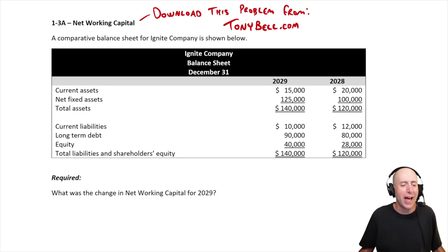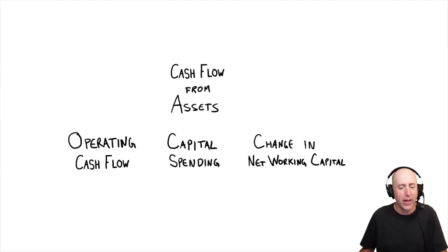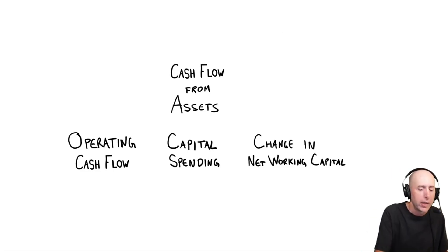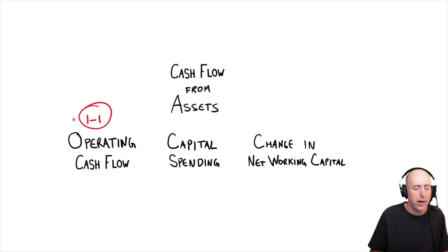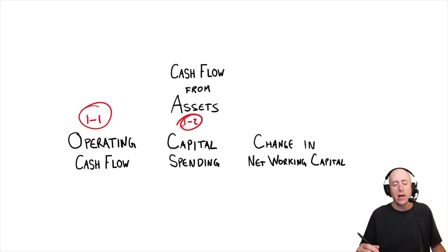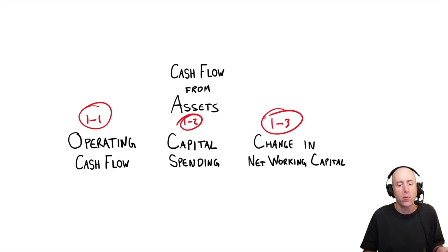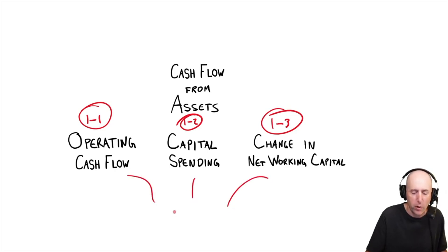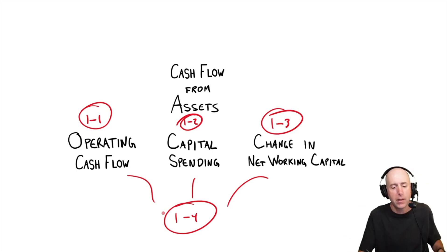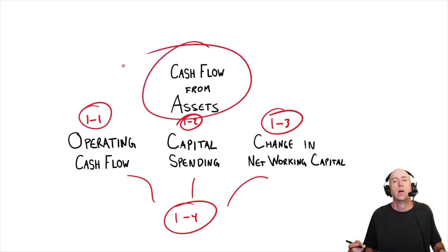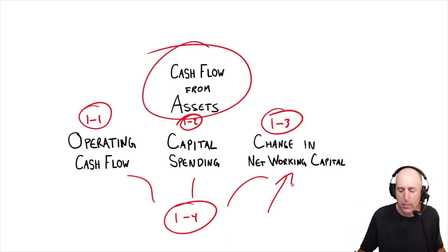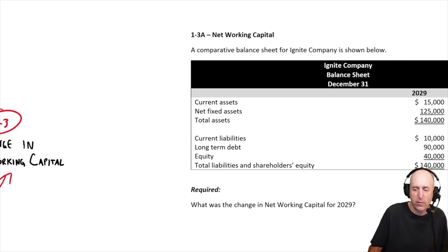Let's take a look at problem 1-3a — we're computing the change in net working capital. Just to give you the lay of the land: in problem 1-1 we learned how to calculate operating cash flow, in problem 1-2 we learned how to calculate capital spending, and problem 1-3 is about cash flows related to changes in net working capital. Problem 1-4 will combine them all to get cash flow from assets. This problem is probably the easiest of the three components.